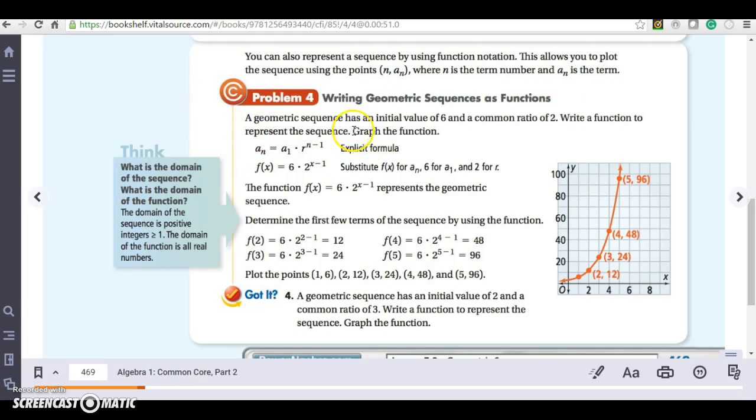It says the geometric sequence has an initial value of 6 and a common ratio of 2. Write a function to represent the sequence and graph the function. So I know that a_1 is 6, my ratio is 2, and I have n minus 1 or x minus 1. Change into x minus 1. So my function f(x) = 6 × 2^(x-1) represents the geometric sequence.